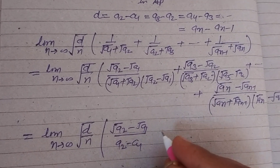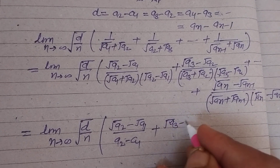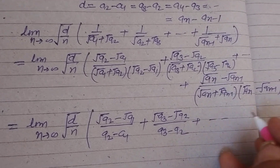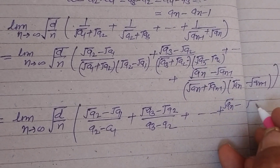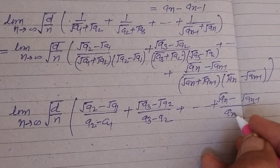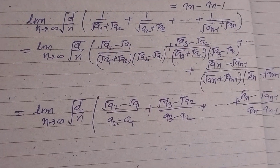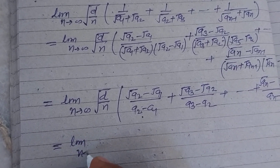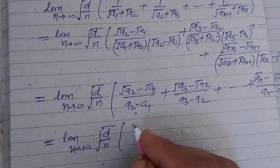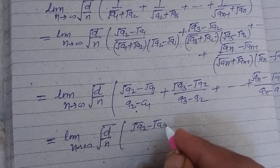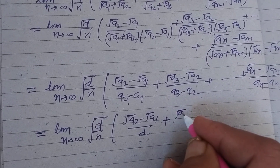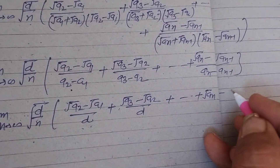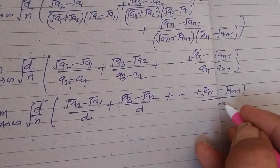After rationalization: root A2 minus root A1 over (A2 minus A1), plus root A3 minus root A2 over (A3 minus A2), plus and so on, plus root AN minus root AN minus 1 over (AN minus AN minus 1). And what is each denominator? This is d.